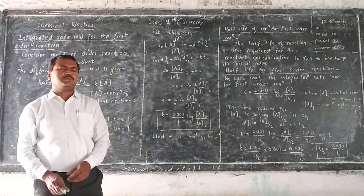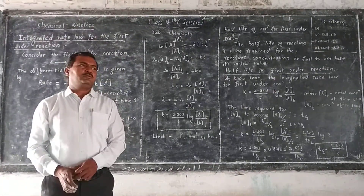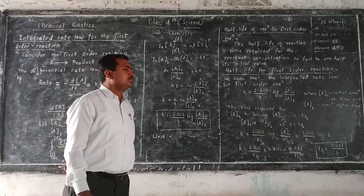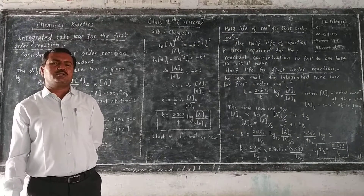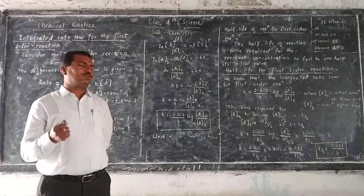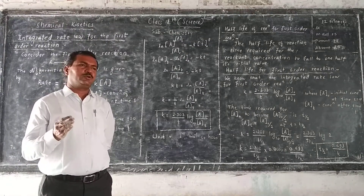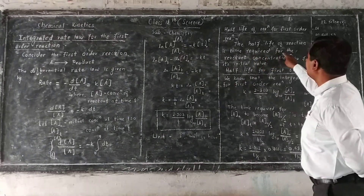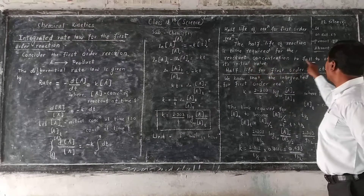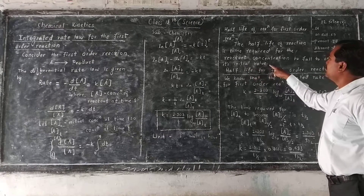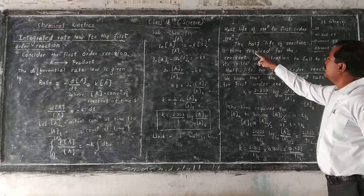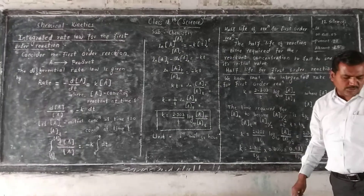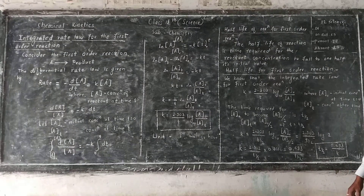Now, half-life of a reaction means the time required for the reactant concentration to fall to one-half of its initial value. If a complete reaction takes a certain time, and we assume only half the product forms, then half the time will be required. The half-life of a reaction is the time required for the reactant concentration to fall to one-half of its initial value — that time is the half-life period.